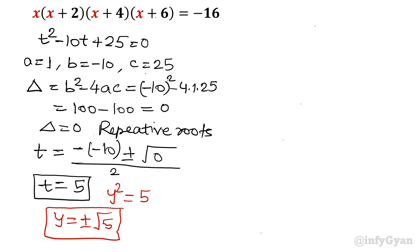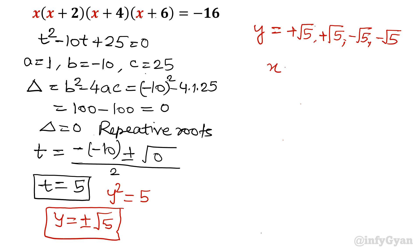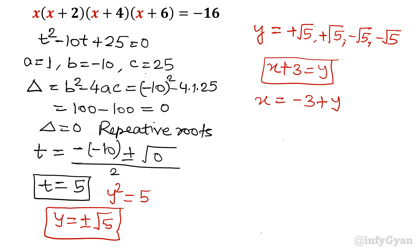Because it is a quartic equation, repetitive roots are there. So the roots for y are: plus root 5, plus root 5, minus root 5, minus root 5. Now let us find x. Initially we set y equal to x plus 3, so x equals y minus 3. Therefore x equals minus 3 plus or minus root 5.